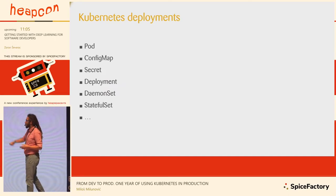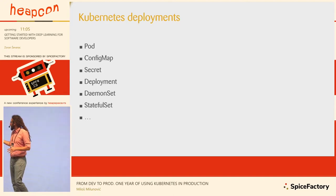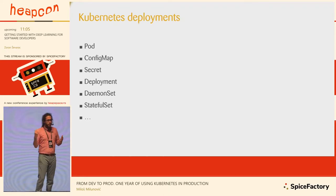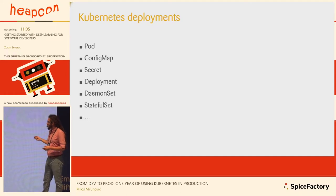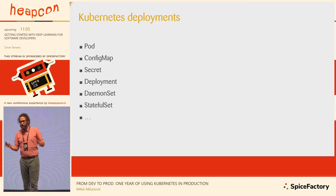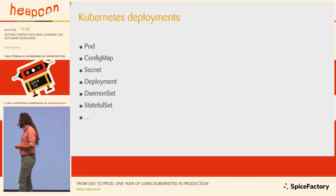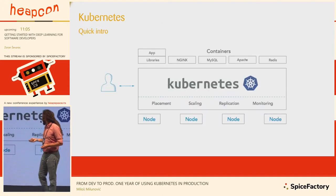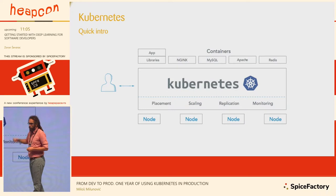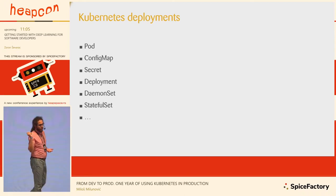Quick explanation of Kubernetes resources: a pod is like a virtual machine on which you run your Docker containers. A config map is like a key-value store where you store configurations — whether files or environment variables — that you can inject into your containers. Secrets work basically the same way. Deployments let you run a pod and tell Kubernetes to manage its state — if it gets killed, spin it back up. Daemon sets run an application on each one of your nodes. Stateful sets are used for applications that require keeping state.